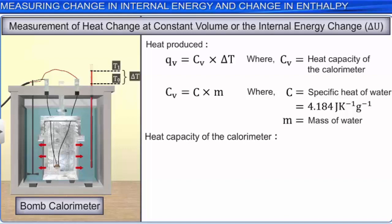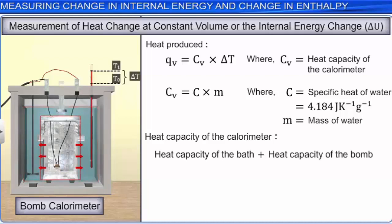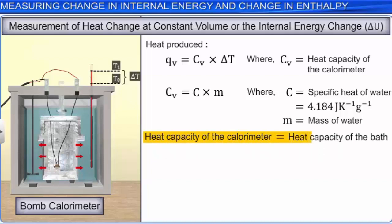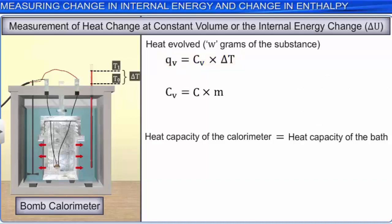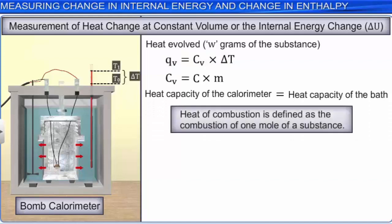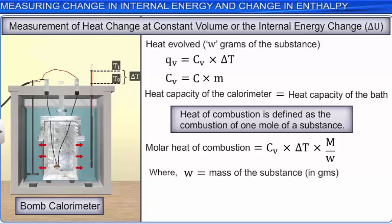Heat capacity of the calorimeter is the sum of heat capacity of the bath (water) and heat capacity of the bomb (metal). Since water has a high value of heat capacity compared to the metal, the heat capacity of the metal is neglected. This QV is the heat evolved when combustion of W grams of the substance takes place. Since heat of combustion is defined as the combustion of one mole, the molar heat of combustion = CV × delta T × M / W, where W is the mass of substance taken and M is the molecular weight.